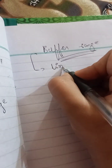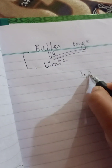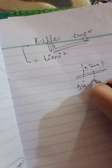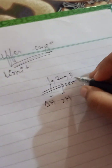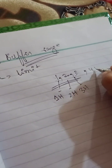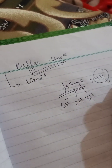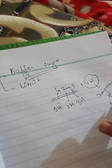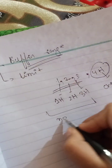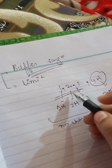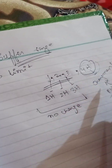The next term is buffer range. Buffer range is basically the buffer limit. For example, if I add one, two, or three hydrogen ions, the pH does not change. But if I add four hydrogen ions, a change in pH will occur. So the range from one to three represents no change — that is the buffer range or limit. Beyond that limit, the pH changes.